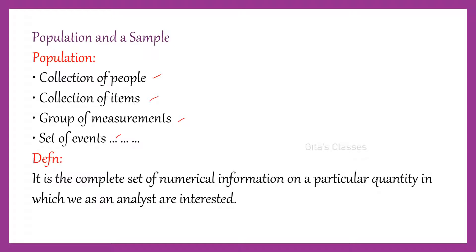Population in common usage generally refers to only the collection of people. But in statistics, population means collection of people, collection of items, group of measurements, and set of events and so on. The proper definition: population is a complete set of numerical information on a particular quantity in which we as an analyst are interested.